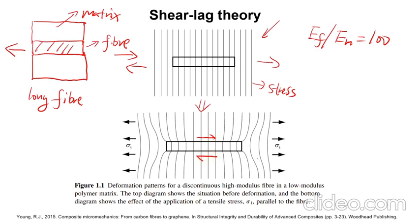You want to load the fiber, but how? The only mechanism is to introduce some shear stress at the interface. The stress is the lag — the main word 'lag.' Why is there a lag? You are not directly applying the stress on the fiber. There's a delay because you need the matrix to pass stress into the fiber. That's how the word lag comes from.